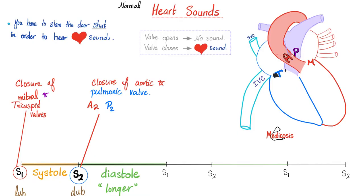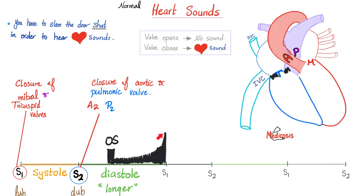Tricuspid stenosis is a narrow tricuspid valve — failure to open. The tricuspid valve is supposed to open during diastole of the ventricle, so tricuspid stenosis produces a diastolic murmur similar to the murmur of mitral stenosis. Recalling mitral stenosis: there is an opening snap followed by a diastolic rumbling murmur with presystolic accentuation, ending with a loud S1. Tricuspid stenosis is similar but less dramatic: the murmur is softer, higher-pitched, and shorter in duration compared to its mitral stenosis counterpart.